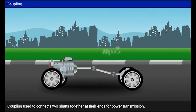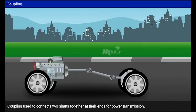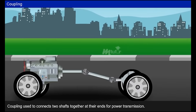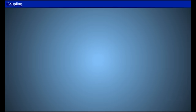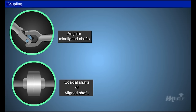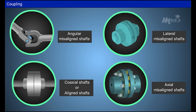A coupling is a mechanical device which connects two shafts together at their ends for power transmission. They are used in angular misaligned shafts, coaxial or aligned shafts, lateral misaligned shafts, and axial misaligned shafts.